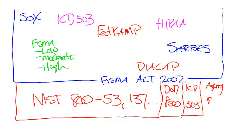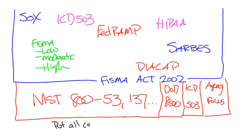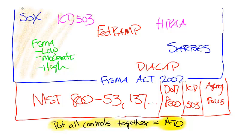And so you have DOD 8500, of course, ICD-503, and agency-focused security controls as well. But you put all of these controls together — these NIST controls — then you add on the specific controls for the agency: DOD, ICD, or other types. Higher education may have some specific focus on their controls, and that's how you get an Authority to Operate, or an ATO.